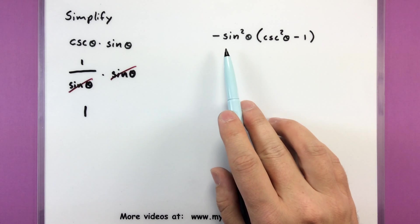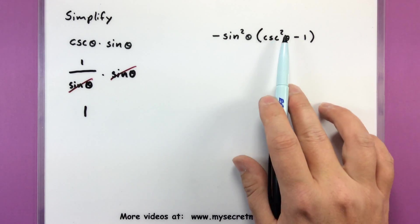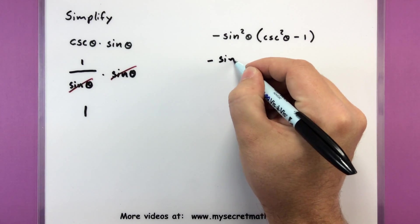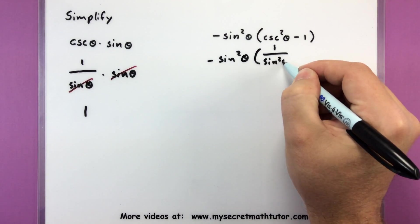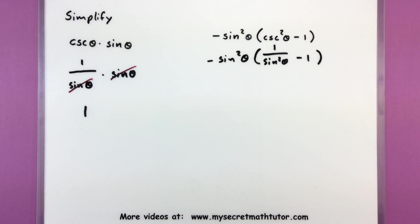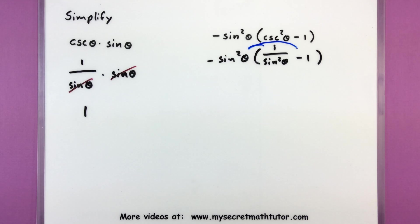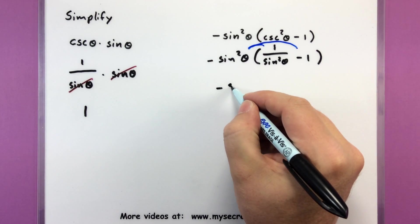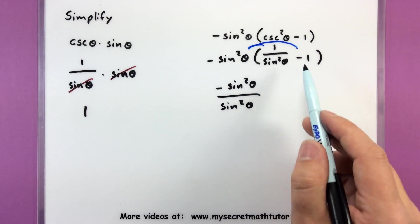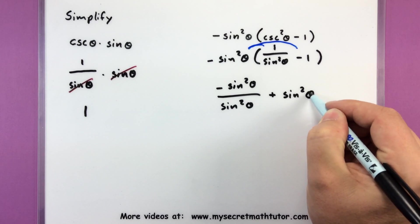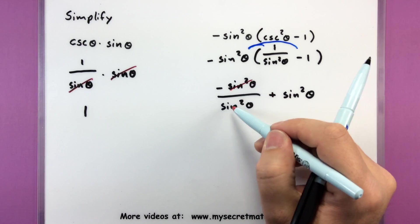Let's try another one — a little bit more difficult. We'll do negative sine squared of theta multiplied by the quantity cosecant squared theta minus 1. Let's rewrite that cosecant of theta much like we did last time. This one's squared so we also want to make sure our value is squared as well — so 1 divided by sine squared of theta. We're multiplying by sine squared of theta, so let's put that inside parentheses and distribute to both parts. This gives us negative sine squared of theta all over sine squared of theta. Then distributing to the second part, negative times a negative will be a positive sine squared of theta. Here we can cancel sine squared over sine squared — those are gone.